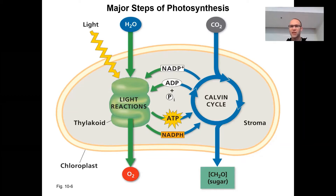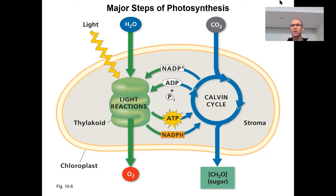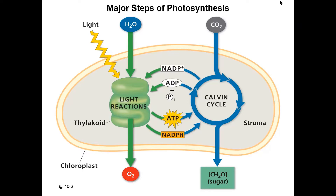Those are high energy compounds. Our cells love them, but they're not really good for long-term storage. We would like to recycle those, and so we want to store energy more long-term. We want to lock it up in chemical bonds in various organic molecules, such as sugars. So we're going to do that by taking carbon dioxide out of the atmosphere and fixing it into organic compounds. That is what the Calvin cycle is about.